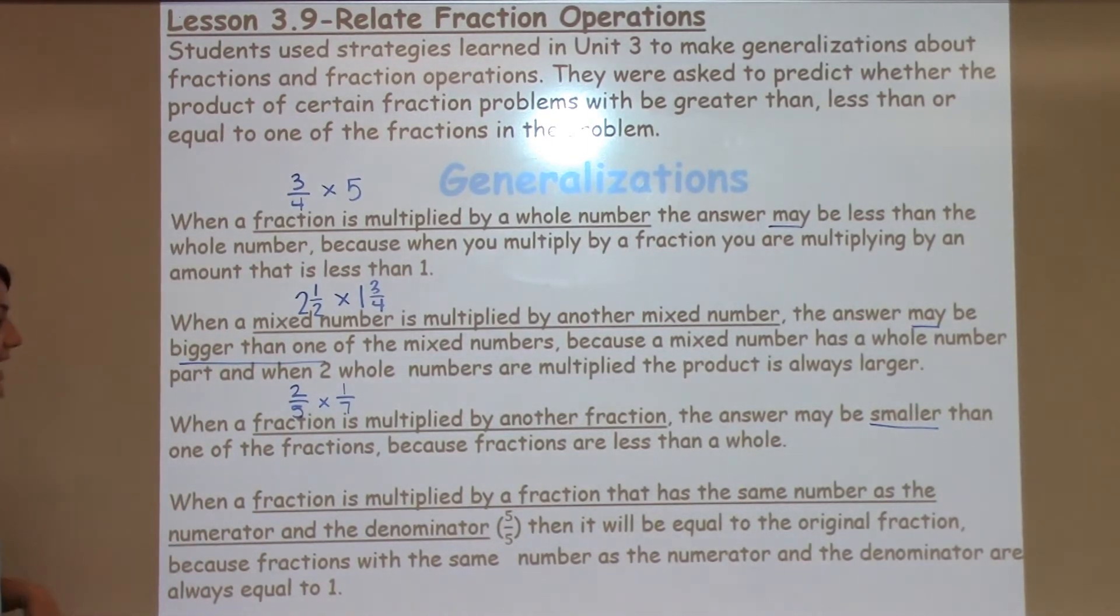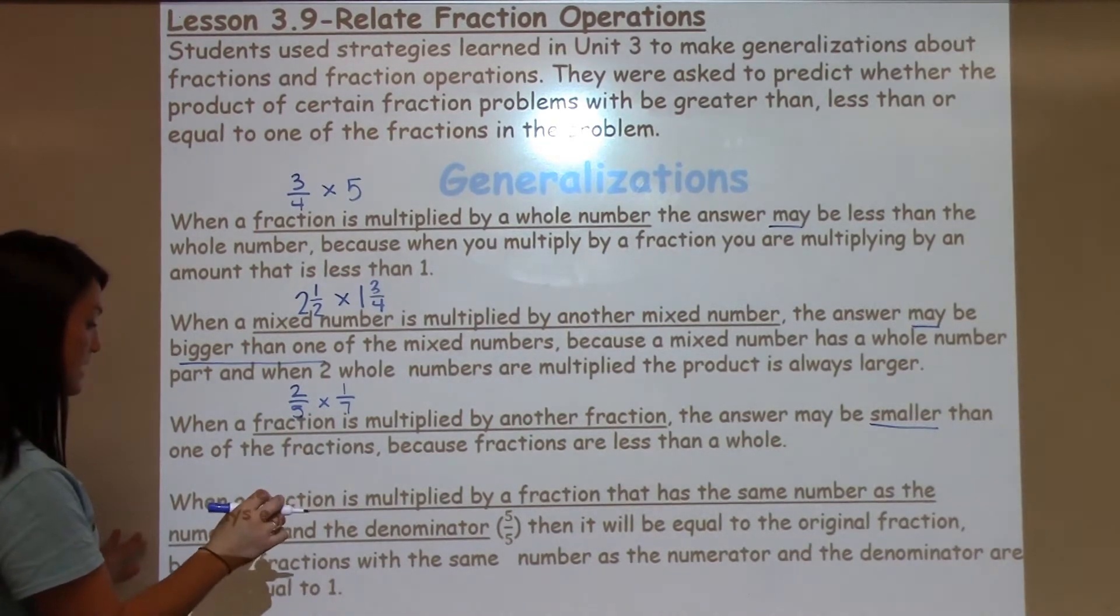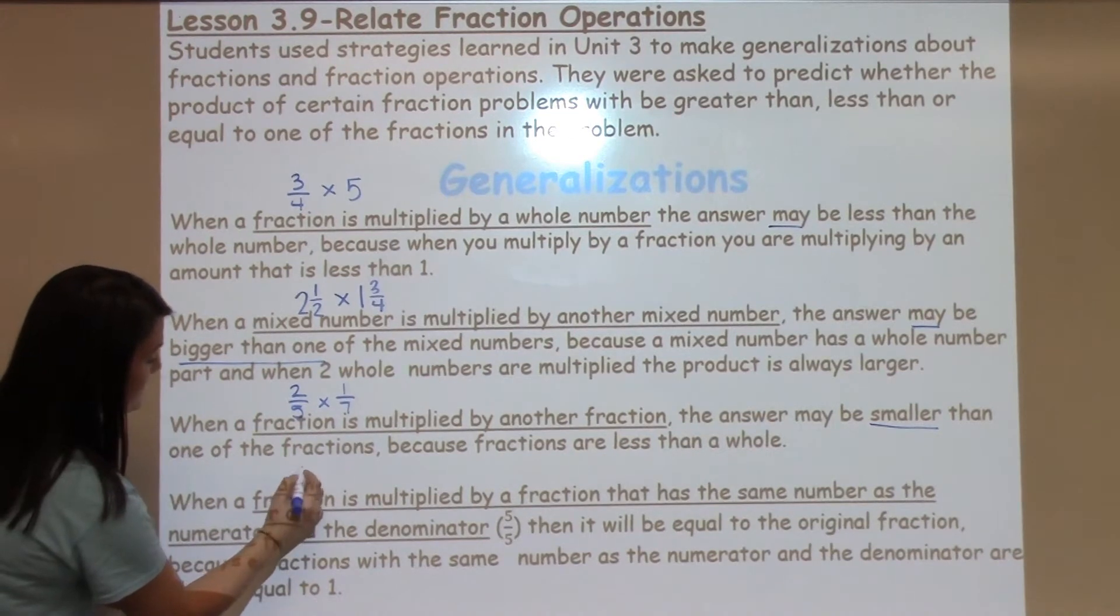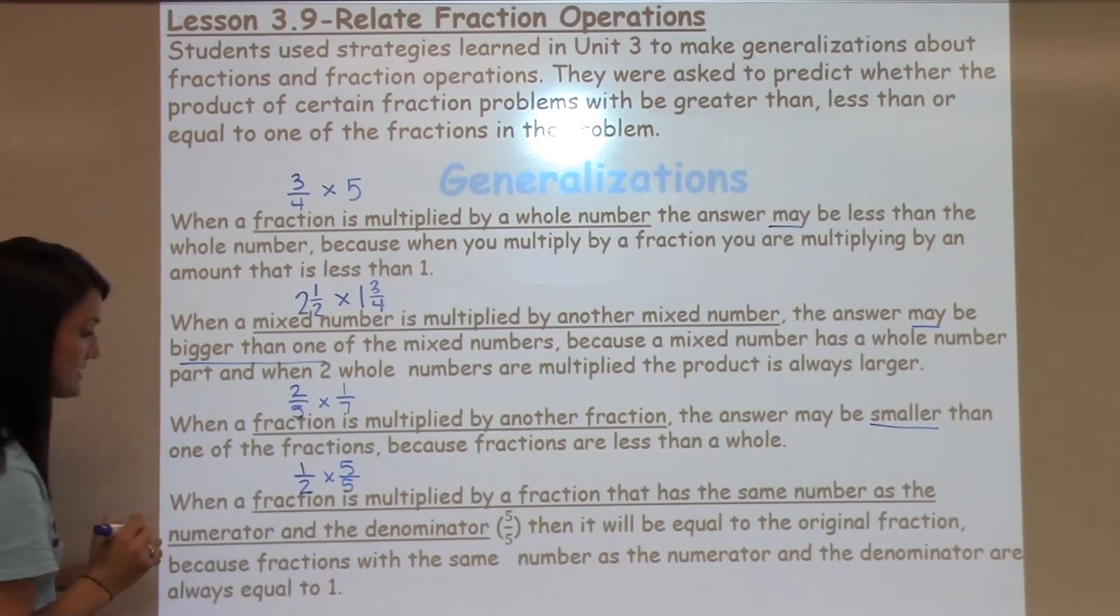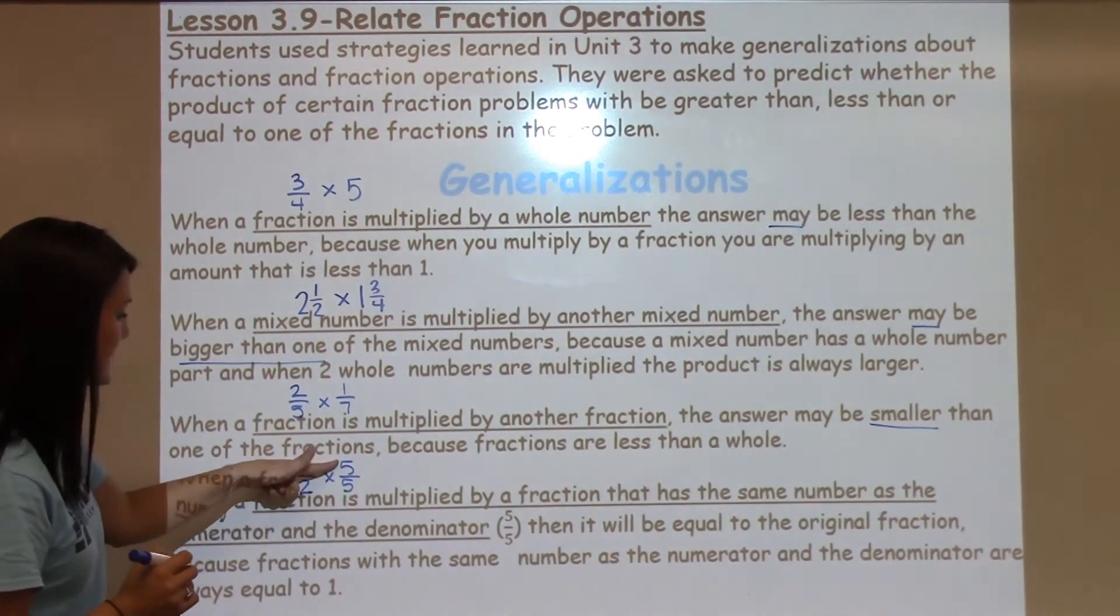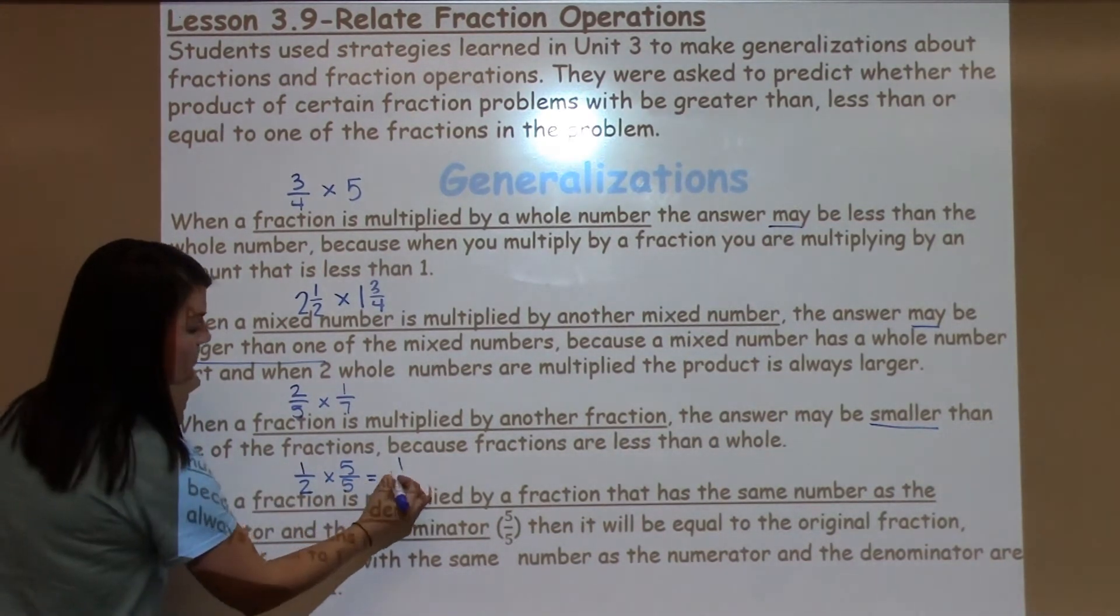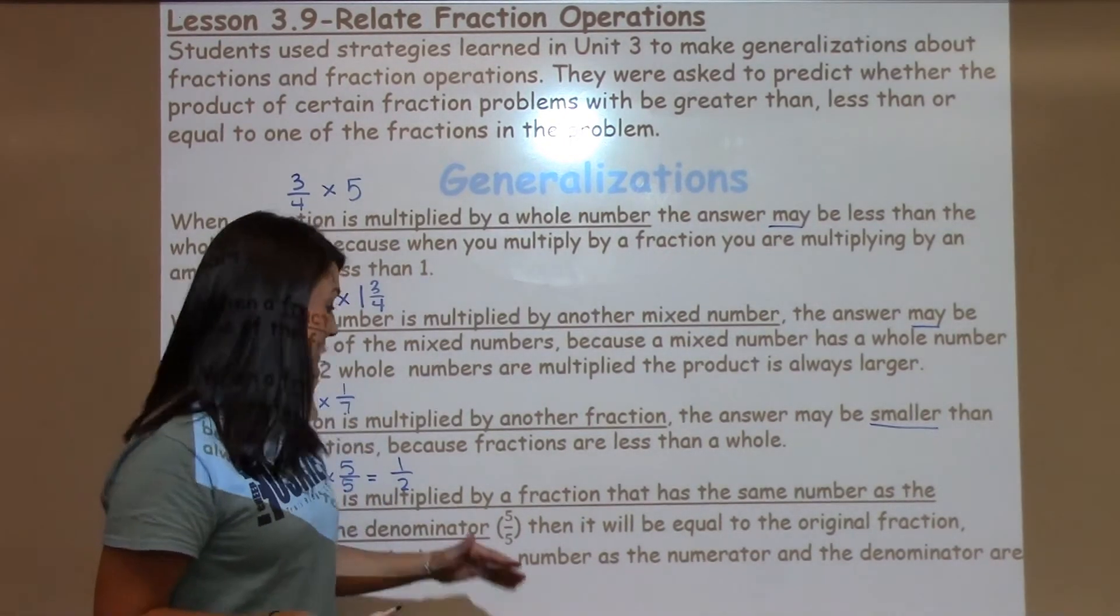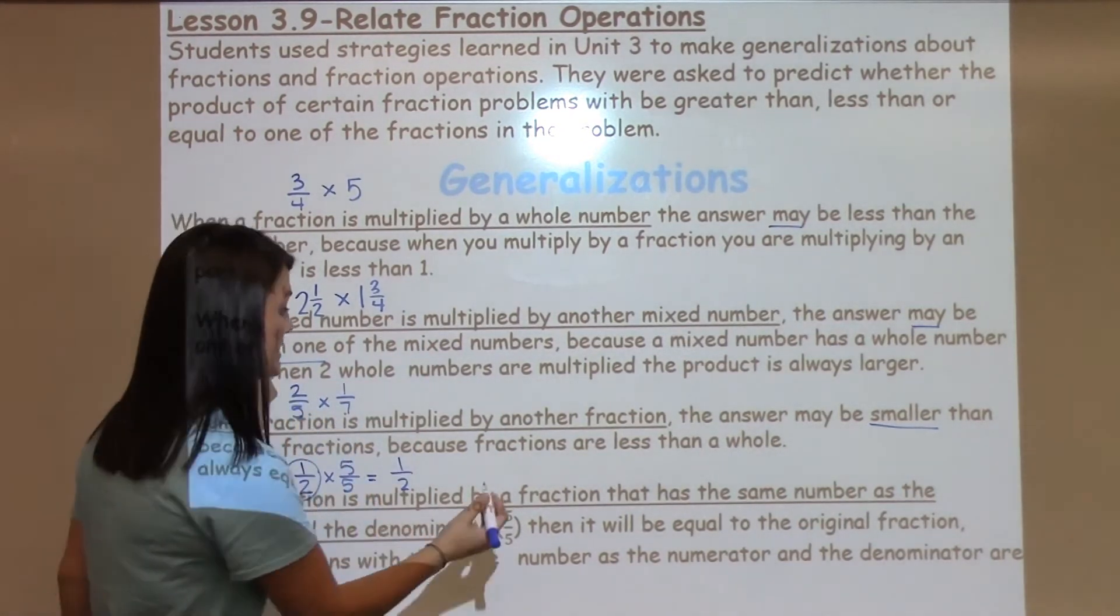And the last example says, when a fraction is multiplied by a fraction that has the same number as the numerator and the denominator, and it gives us an example, 5 fifths. So, let's take 1 half times 5 fifths. So, that's a regular fraction multiplied by a fraction that has the same number on the top and the bottom. Then, it's going to be equal to the original fraction, 1 half. Why is that? Any time that a fraction has the same number on the top as it does on the bottom, it's equivalent to 1.